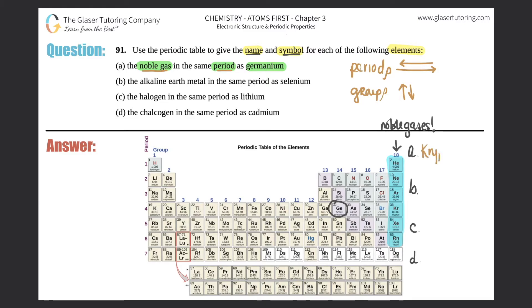Moving on, now they want the alkaline earth metal in the same period as selenium. Where's selenium? Selenium is also in the same period as germanium. Here is selenium right here. So we're still looking from anything in period four, so from here all the way to here. But now the question is, where are the alkaline earth metals?